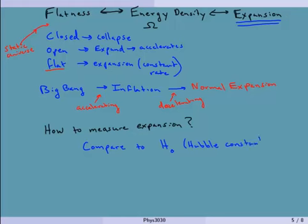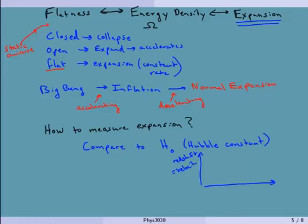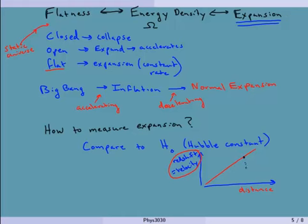The Hubble constant gives us a way of measuring how far away something is. If I can look at the redshift, which is proportional to the velocity — the faster the velocity, the more the redshift on the y-axis — and the x-axis tells us the distance. So if I know this is some constant line, and I measure a point here on the line, that gives me an idea of how far away something is. I can look at the redshift, go over to this line, and go down and it tells me how far away it is. But this is comparing it to the Hubble constant, which we're trying to measure, so we need another way of measuring distance.